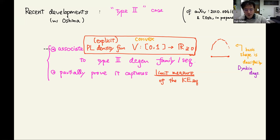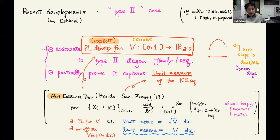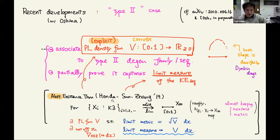I'm explaining recent work. The work consists of joint work with Oshima — our paper was split in two; Oshima's part has not yet appeared but mine has. We associate a piecewise-linear function to each type-II degeneration. This itself can be interesting from an algebraic-geometric viewpoint. Partially with some conjecture, it's partially proved that this captures the limit measure of the K3 Ricci-flat metric. This was really inspired by the work of Honda-Sun and Sun-Robinson, who proved the existence of this V in a different way: if a sequence of K3 converges to a segment, we should have some PL function. We kind of explicitly determined this V.